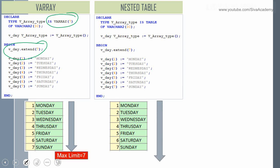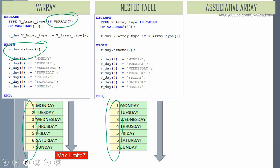In both vArray and nested table the index is predefined and maintained by Oracle. Whenever we initialize or use the extend function, Oracle automatically allocates the next memory location and we can access the last memory location to store the data. In fact we can use the last function to know the index of the last allocated memory location. In associative array the index part along with the value part is user defined — as a developer we can decide what to store in the index portion and what to store in the value portion. This is the major functional difference between associative array compared to nested table and vArray.